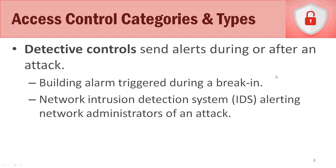Detective controls send out alerts during or after an attack. A simple example would be a building alarm — whether silent or audible — going off during a break-in to detect the intrusion and deter further harm, or triggering a silent call to the police. From an IT perspective, a network intrusion detection system would alert network administrators and cybersecurity professionals of an attack as soon as it's identified.